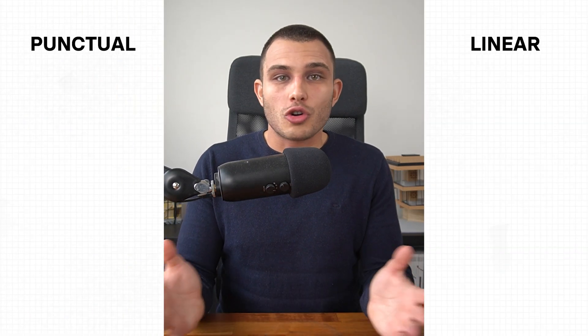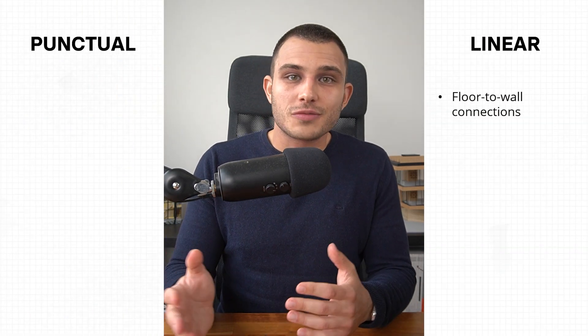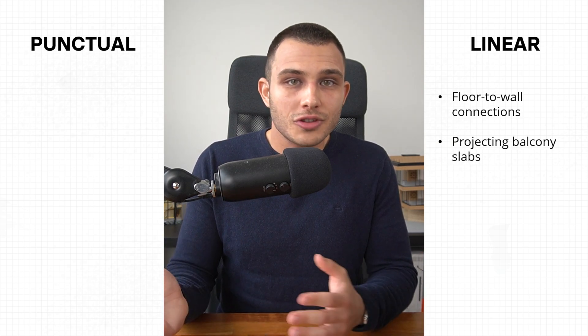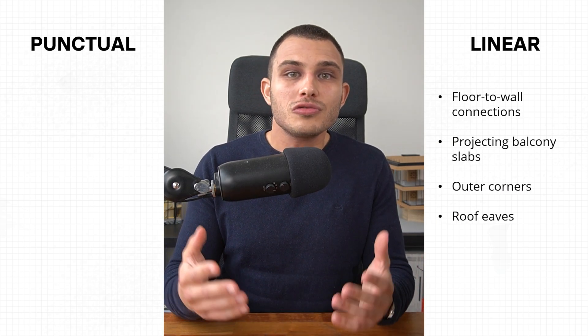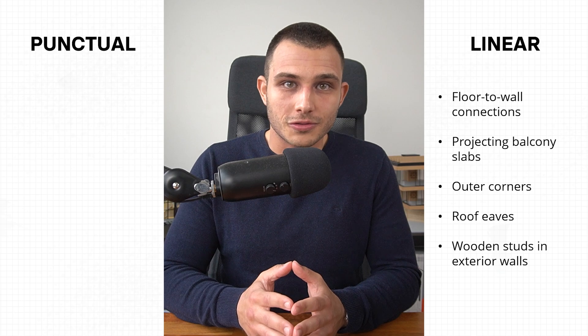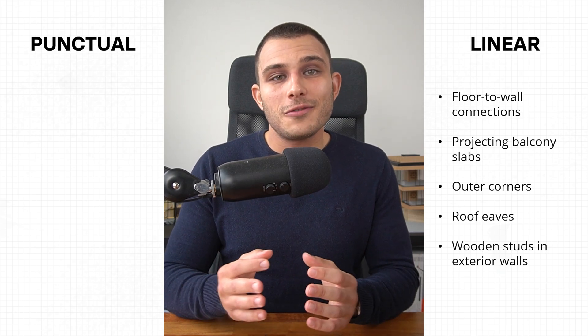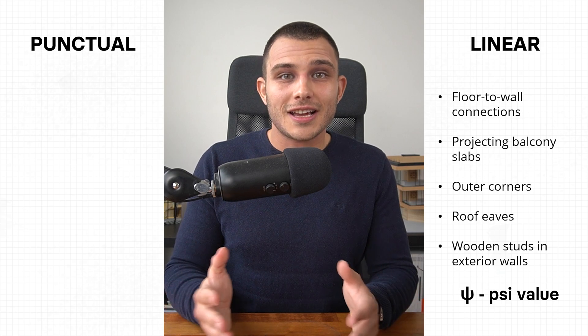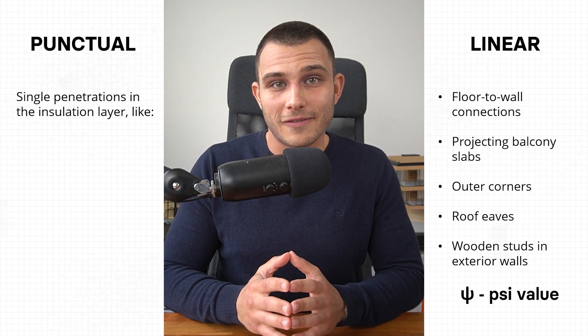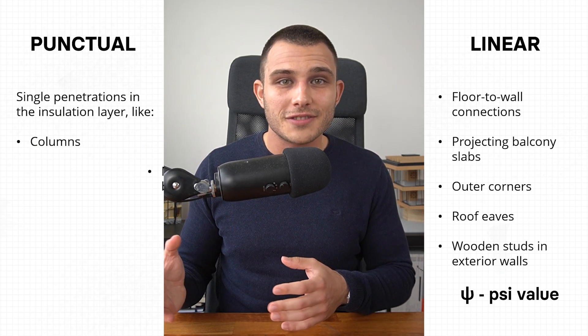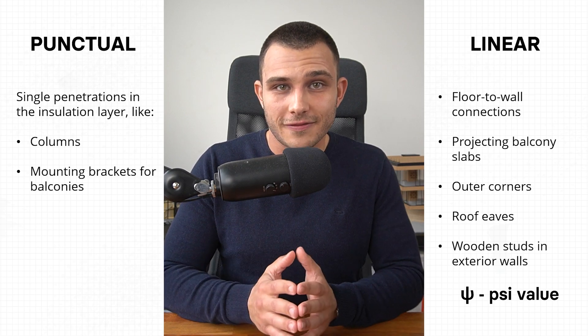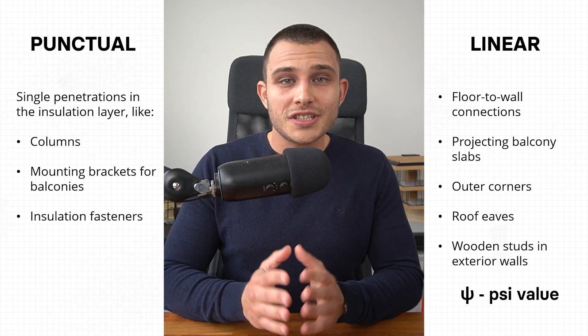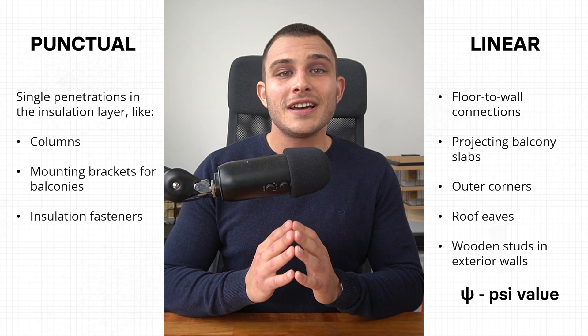There are two types of thermal bridges: linear and punctual. Linear thermal bridges could be floor-to-wall connections, projecting balcony slabs, outer corners, roof eaves, but also even the wooden studs in exterior walls. These are calculated with the Psi value. Point thermal bridges, on the other hand, are single penetrations in the thermal envelope, like columns, mounting brackets for balconies, and even insulation fasteners. Point thermal bridges are measured with the Chi value.